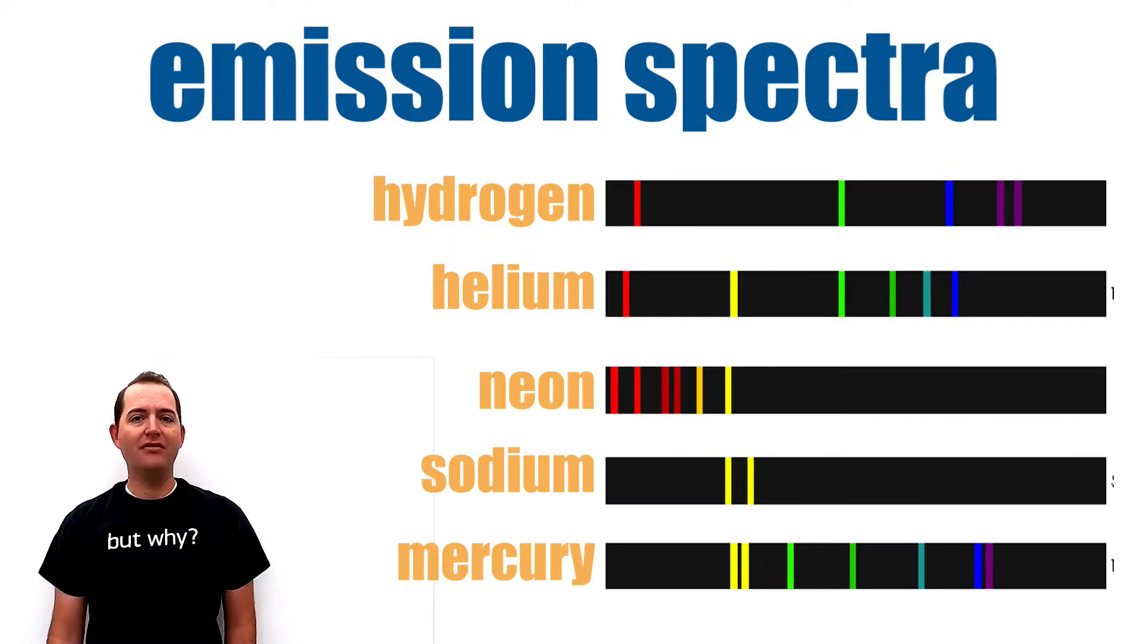Each element will emit a unique emission spectra. These include unique colors and unique wavelengths of light. This phenomena is tied to the arrangement of electrons around an atom and the varying energy levels, sublevels, and orbitals that are unique to each element.